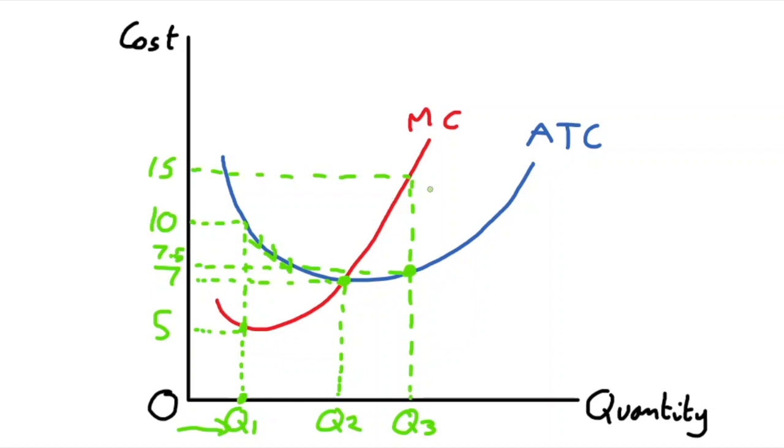So at a quantity of three, the very last thing produced is costing you fifteen euro but the average cost of all those units from zero up to Q3 is only seven euro fifty. So in that case, if marginal cost is higher than the average, the last unit sold is increasing the average cost of production as shown on the graph.